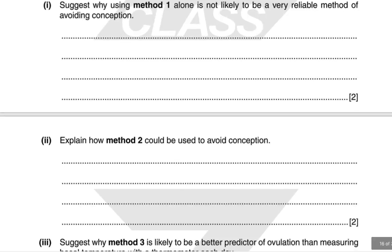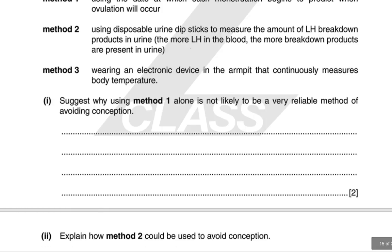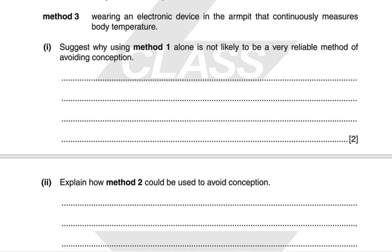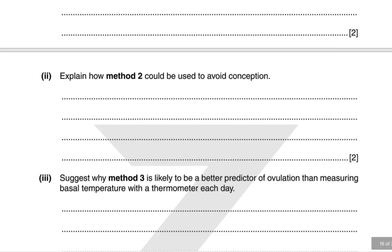Method 2 could be used by avoiding sexual intercourse when LH levels are high, because that indicates ovulation will take place. You can also predict the next LH surge by keeping track of LH concentrations over time.